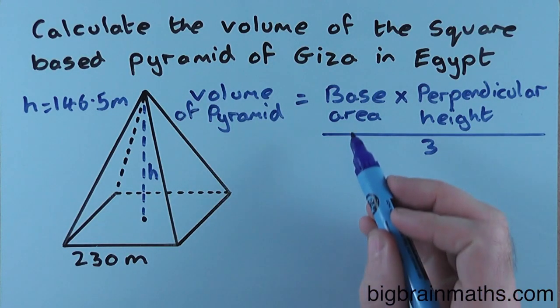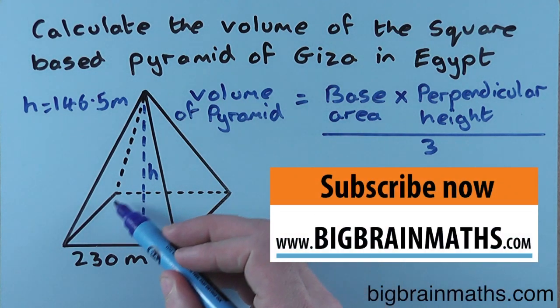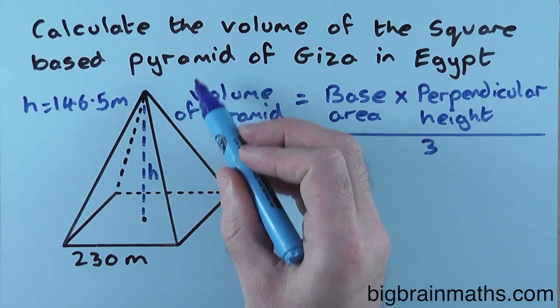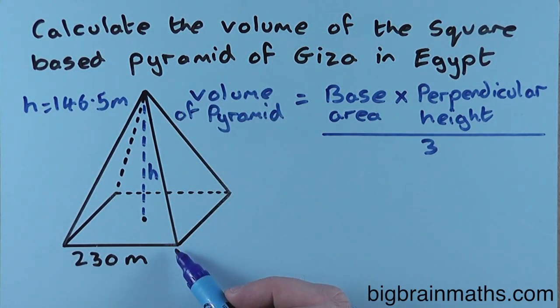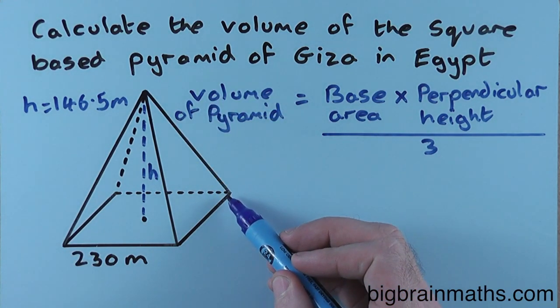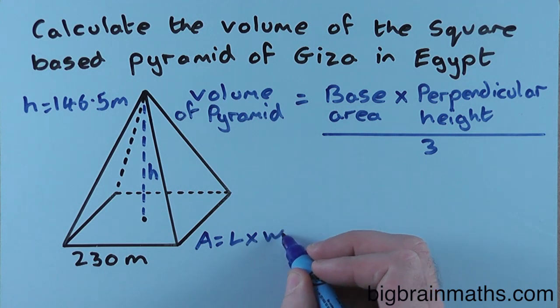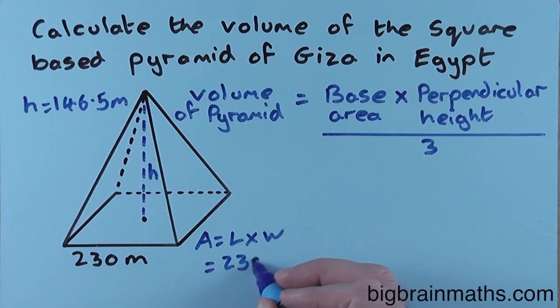This is the base of the pyramid and we're told that it's a square-based pyramid, which means that it's 230 meters by 230 meters. To work out the base area, we need to do the length multiplied by the width. The length is 230 and the width is also 230. This equals 52,900, so the area of the base is 52,900 meters squared.